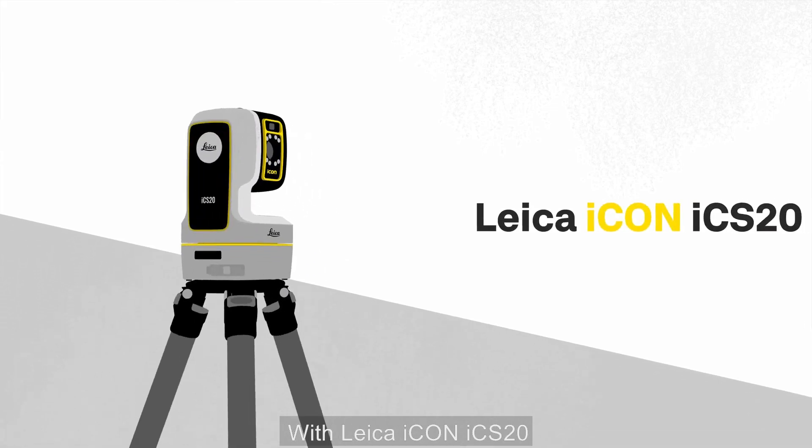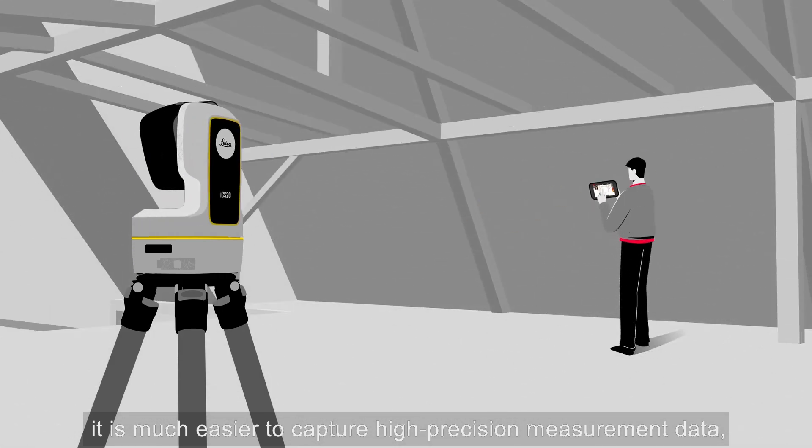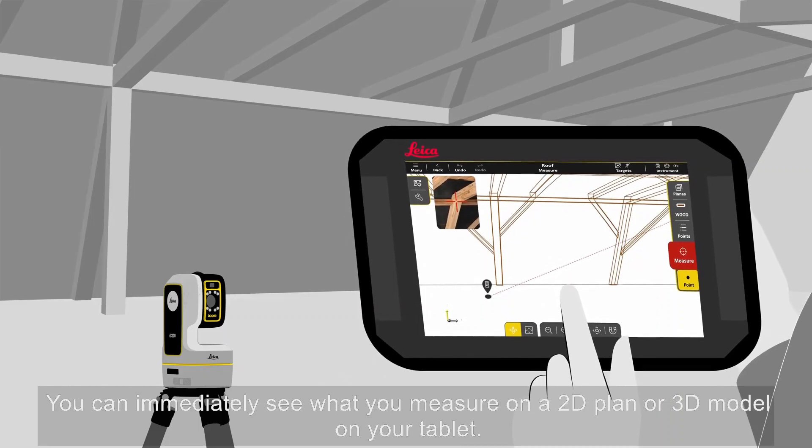With Leica Icon ICS20, it is much easier to capture high-precision measurement data even from hard-to-reach points. You can immediately see what you measure on a 2D plan or 3D model on your tablet.